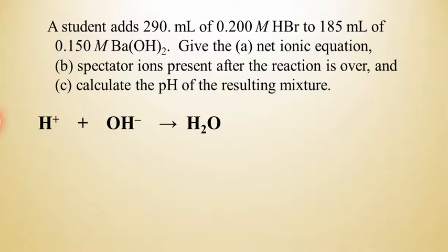The spectator ions, well, hopefully we can see that everything else that's not in the net ionic is going to be a spectator. So that would be including the bromide and the barium ions. Those will be spectator ions.